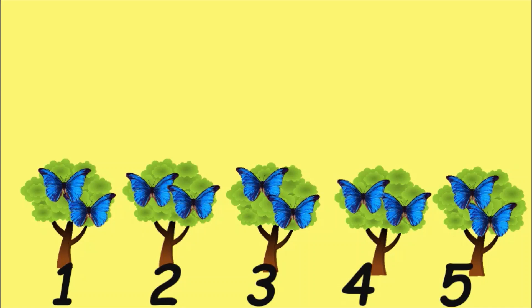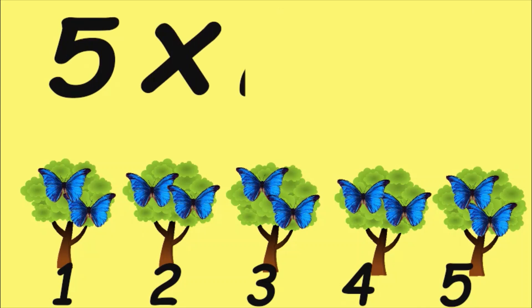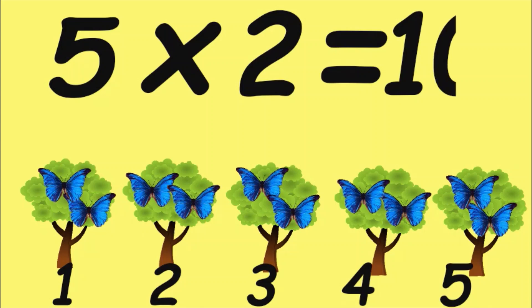There are five trees and two butterflies on each tree, so we write five times two. Add all the butterflies and we get the answer ten.